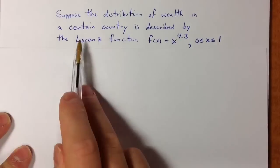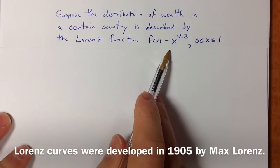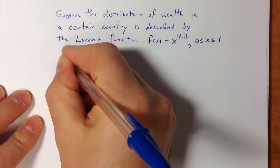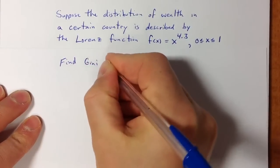Suppose the distribution of wealth in a certain country is described by the Lorenz function f(x) = x^4.3. We'd like to calculate the Gini index.